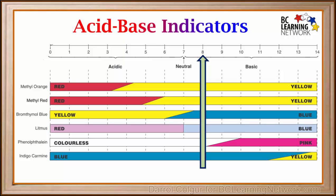At a pH of 8, methyl orange and methyl red are both yellow. Bromthymol blue and litmus are blue, phenolphthalein is colorless, and indigo carmin is blue.